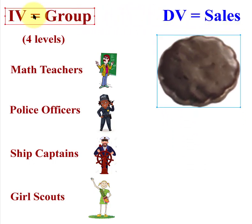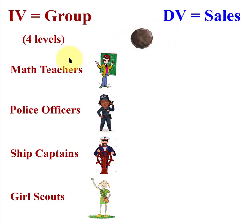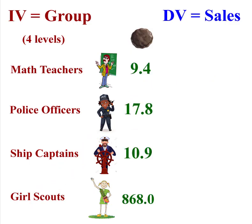So: one IV called 'group,' four levels, and one DV called 'sales.' We give them a month and take the averages of all the math teachers, all the police officers, the ship's captains, and the Girl Scouts, measuring how many Thin Mints they sold.